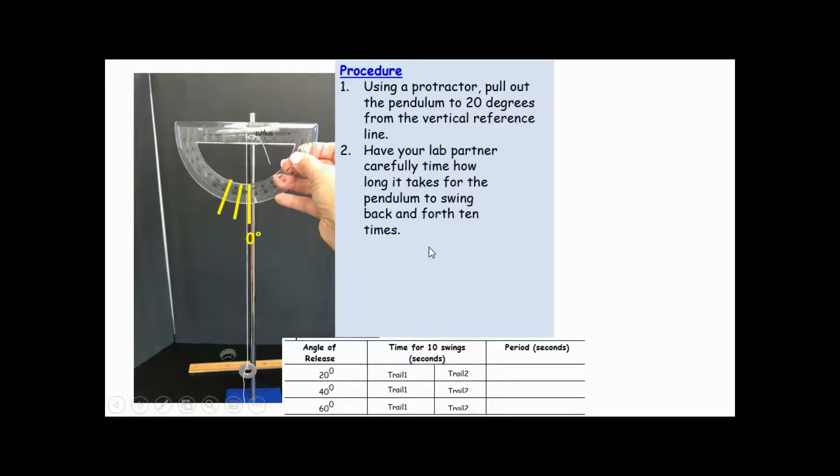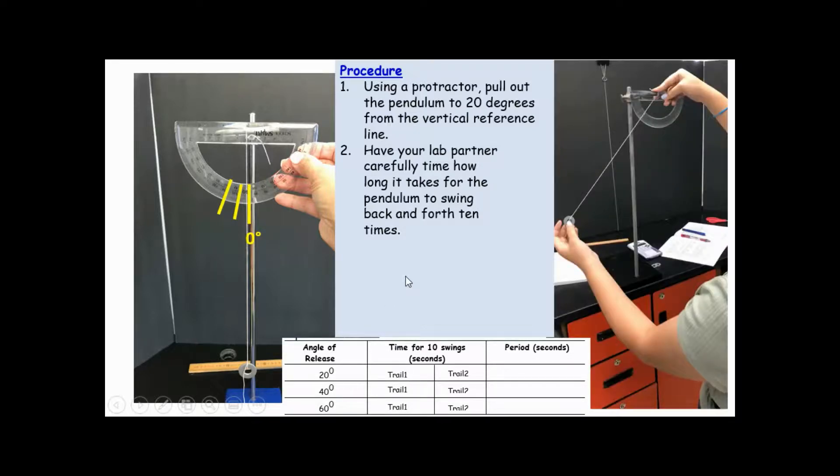Have your lab partner carefully time how long it takes for the pendulum to swing back and forth 10 times. So in this table you have 20 degrees, you have a trial one. You are going to count 10 swings and then repeat a second trial with the same thing.